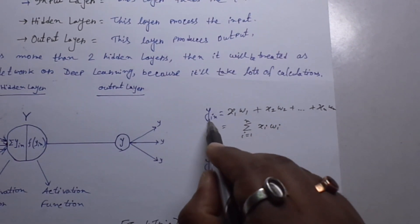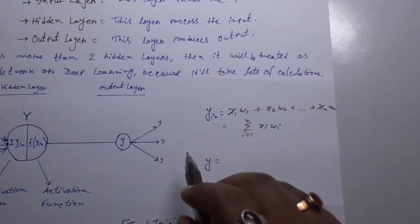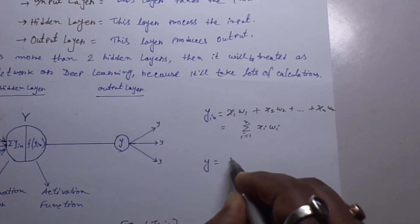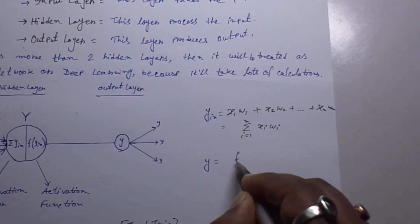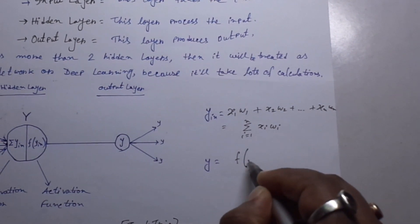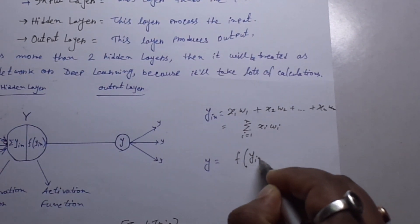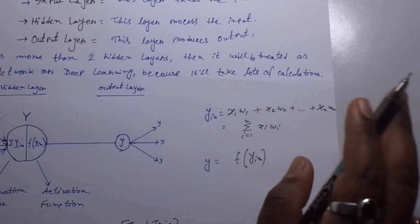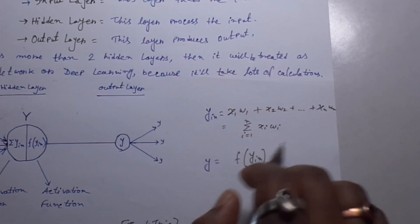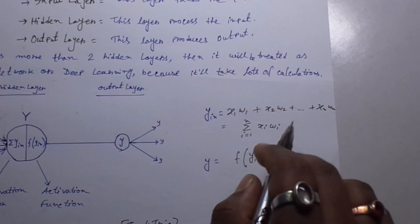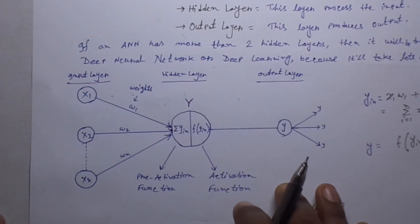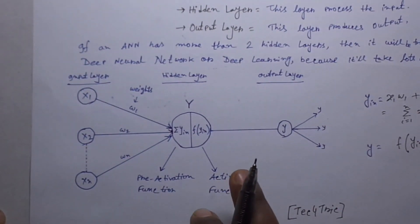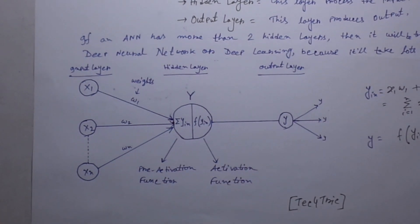It is the formula to calculate y inputs. So now what about y. F for the activation function and in the input section we have y inputs. That's it. It is the mathematical representation of artificial neural network and it was the graphical representation of artificial neural network.